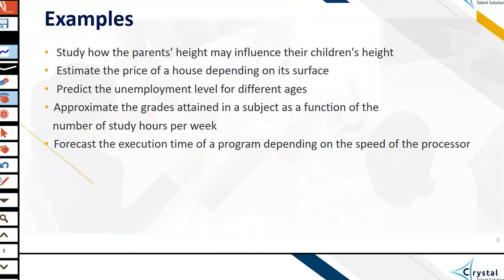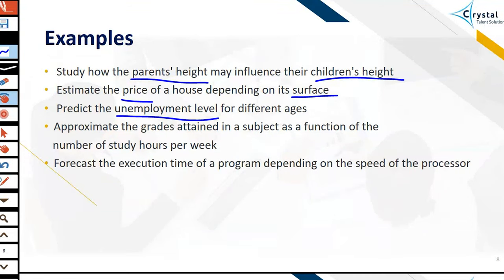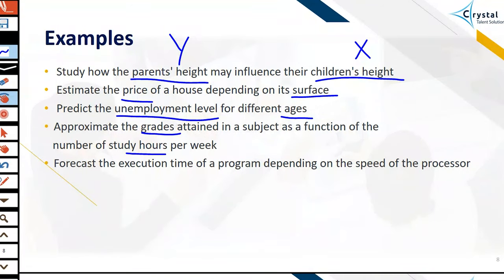In regression analysis, Y is referred to as the dependent variable, the response variable, or sometimes the predicted variable. X is referred to as the independent variable, the explanatory variable, or the predictor variable. We use linear regression models in situations such as: how parents' height may influence their children's height, estimating the price of a house depending on its surface, predicting unemployment level for different ages, approximating grades as a function of study hours per week, or forecasting the execution time of a program depending on processor speed.